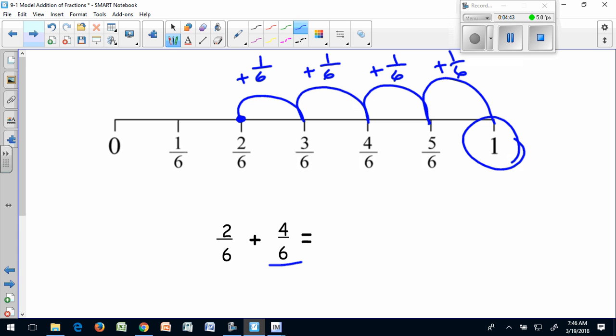And I end at one whole. I also know that one whole is six sixths. Looking back at my fractions, I add my numerators. Two plus four equals six. And I keep my denominators the same. And I get the same answer. Two sixths plus four sixths equals six sixths.